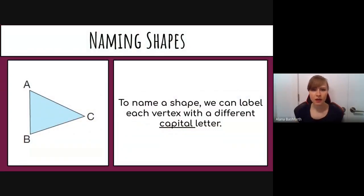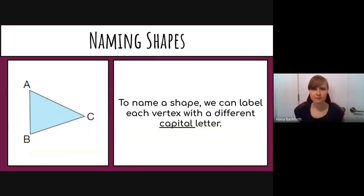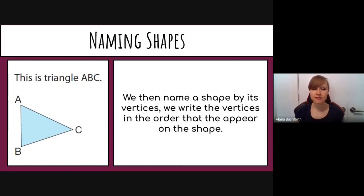Now let's look at naming shapes using letters. When we name a shape, we label each vertex with a different capital letter — it must be uppercase; lowercase means something different. So for a triangle with vertices A, B, and C, we would call it triangle ABC.